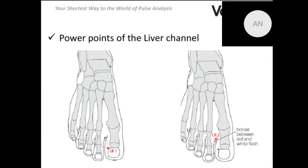The first point of the liver channel is called dadun in Chinese, meaning 'great insight' or 'big hill.' It is located on the foot, from the inner side of the big toe at the nail's root. When working with this point you can use your nail — it's quite comfortable. It regulates menstruation, eliminates stagnation in the urogenital system, and is also helpful when treating stagnation in the liver.